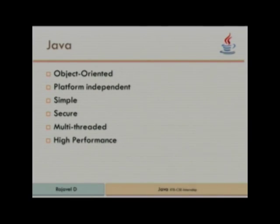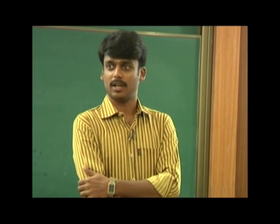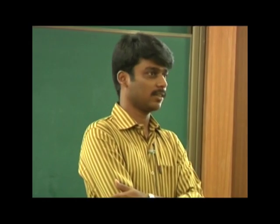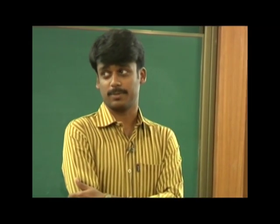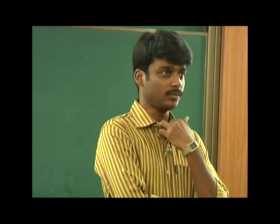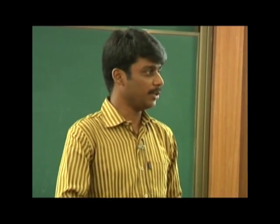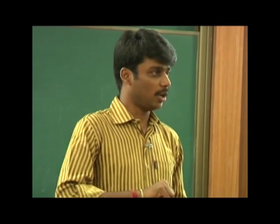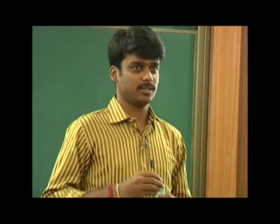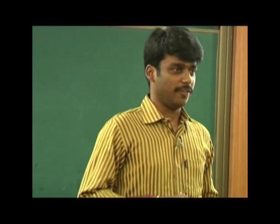Most of them know Java is object-oriented, then platform independent. What is object-oriented? C++ — I think you may have studied C++. C++ is also object-oriented and Java is also object-oriented. Is there any difference between the two, or are both different?